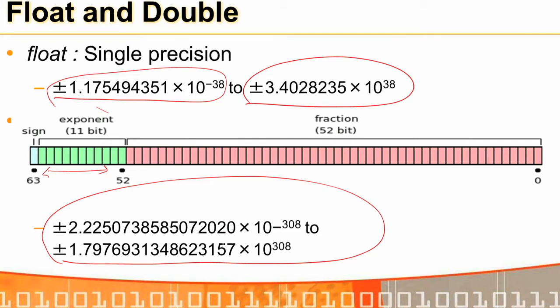With double precision the range extends to approximately ±10⁻³⁰⁸ to ±10³⁰⁸. Going from single to double, the exponent range grows roughly 8 times — from ±38 to ±308. This is how single precision and double precision floating point are represented.